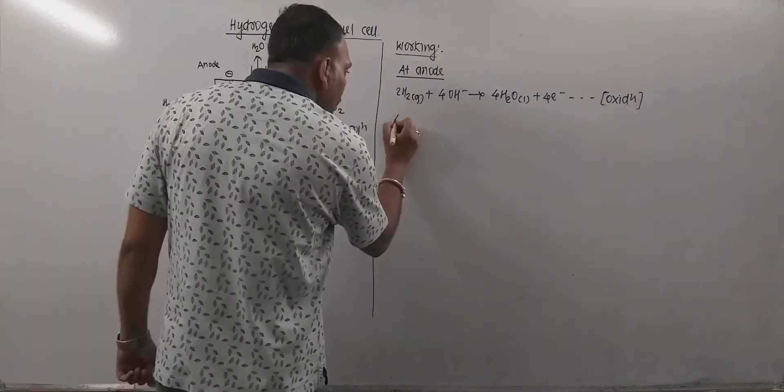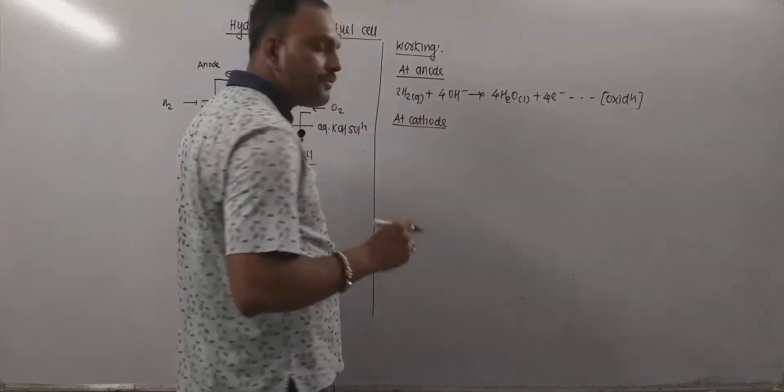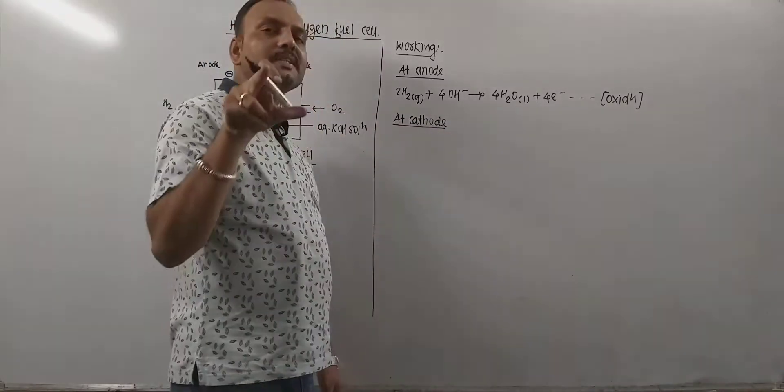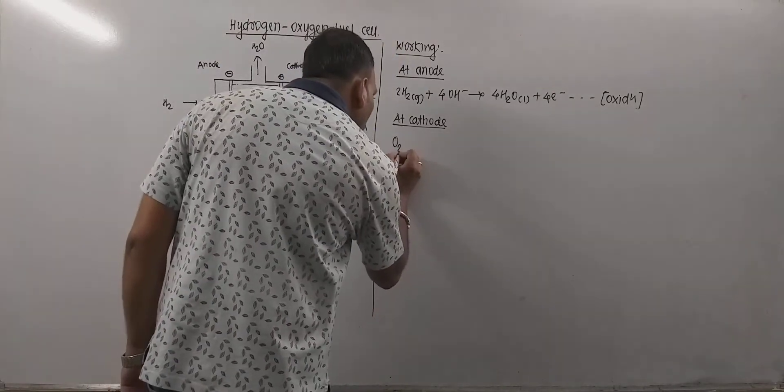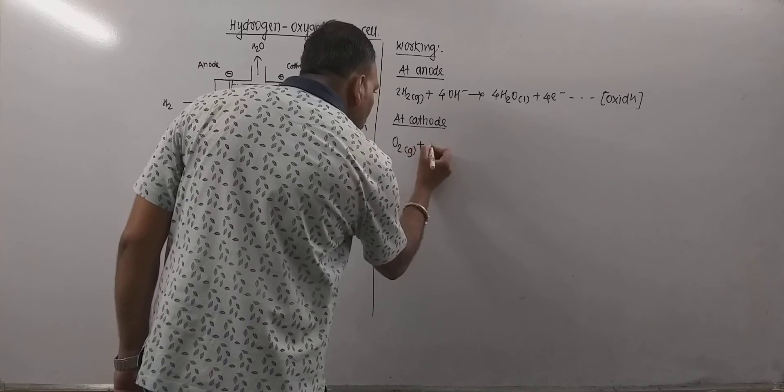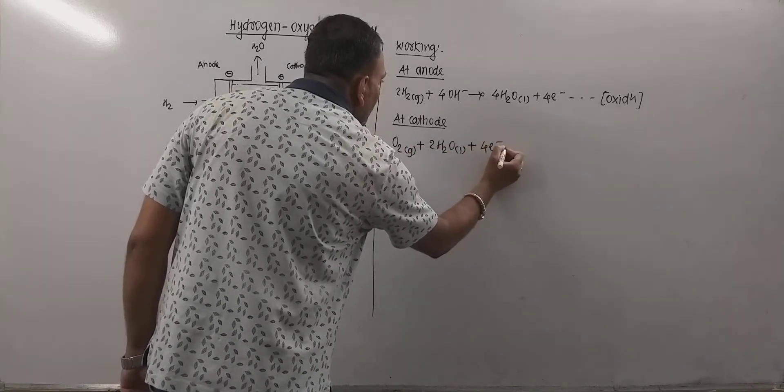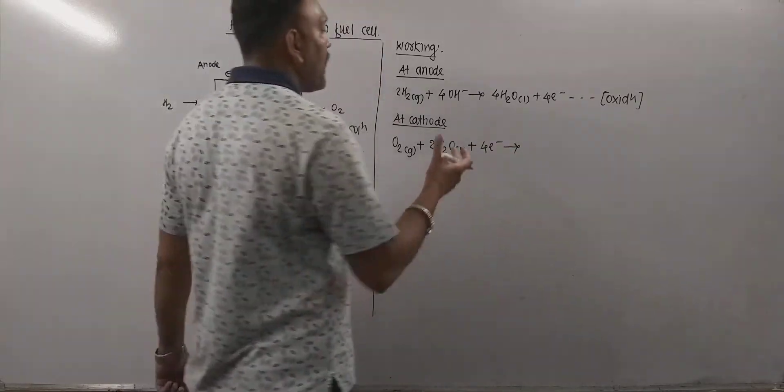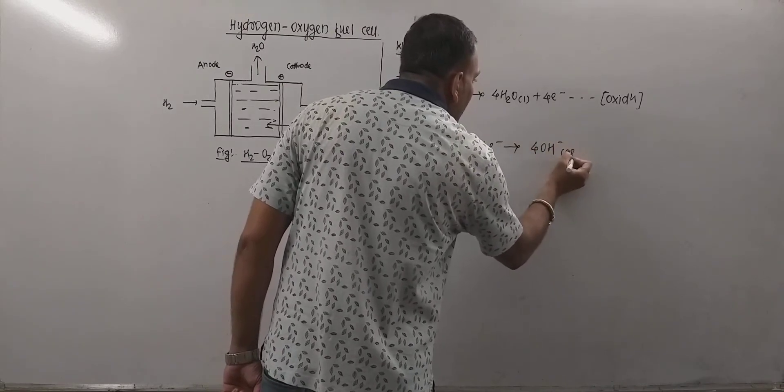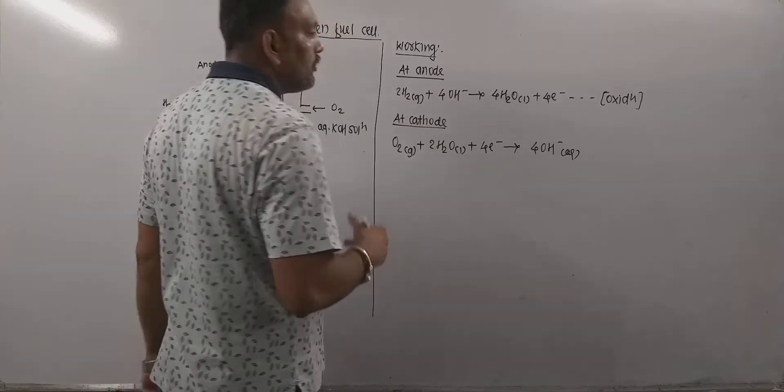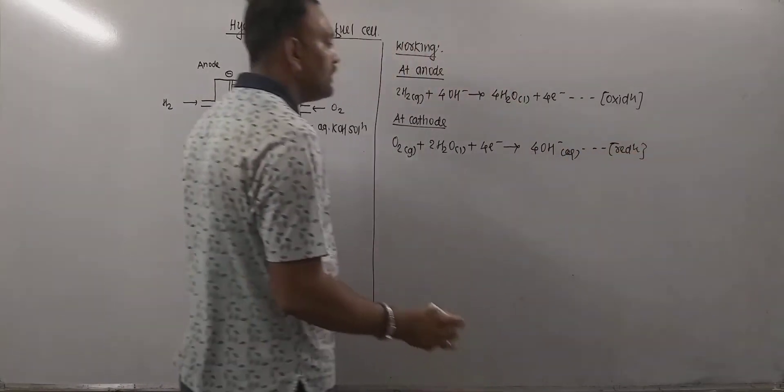Now on the other hand, at cathode. Remember, cathode is an electrode at which reduction takes place. So reduction half cell is nothing but cathode. We are bubbling oxygen gas also. So right here what happens? Electrons released in the process of oxidation are accepted right here and thereby formation of OH minus aqueous takes place. Now this is the net reduction reaction taking place in this cell.